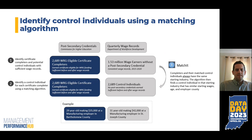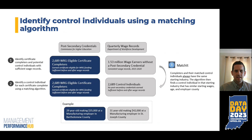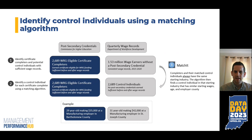From there, we use the MatchIt library to identify specific control individuals matched to each of the certificate completers. Using this library, we can set parameters so that the control individual and the certificate completer always start working in the same industry, and then the algorithm finds a similar individual based on their age, starting wages, and the county of their employer. For example, a certificate completer who is 29 years old, making $35,000 at a manufacturing employer in Bartholomew County, is matched with a 31-year-old making $42,000 at a manufacturing employer in St. Joseph County — not exactly the same, but similar across these attributes.